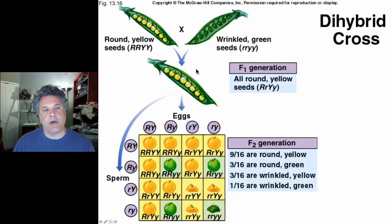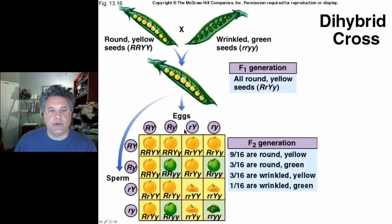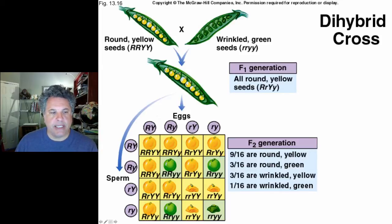Just as in monohybrid crosses, these dihybrids — heterozygous for two genes simultaneously — produce F1 individuals that are doubly heterozygous: big R little r, big Y little y. We ask how these alleles assort into gametes — eggs or sperm — during reproductive cell formation. The F1 individuals self-hybridize, producing eggs and pollen that are randomly mixed.